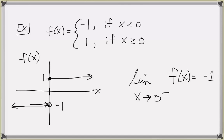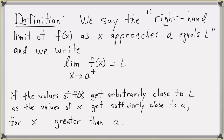Let's state our definitions of one-sided limits. We say the right-hand limit of f of x as x approaches a equals l — or equivalently, the limit of f of x as x approaches a from the right equals l — and we write the same limit notation as before but put a little plus sign above the a to indicate we're approaching from the right. We write this if the values of f get arbitrarily close to l as x gets sufficiently close to a, but only for x greater than a. Intuitively, the function's y-values are getting closer and closer to height l as x gets closer and closer to a, but only when x is slightly to the right of a.